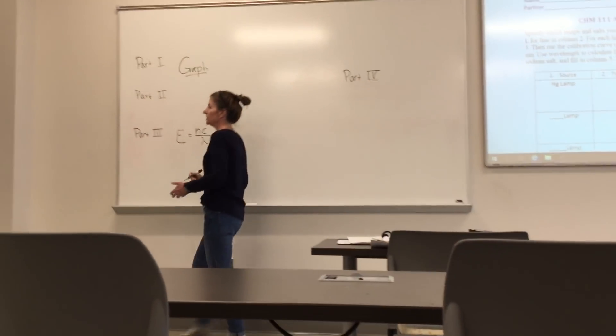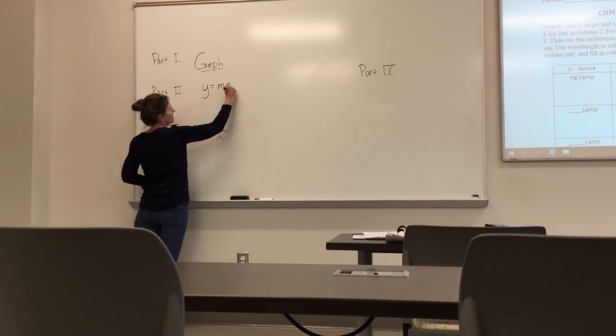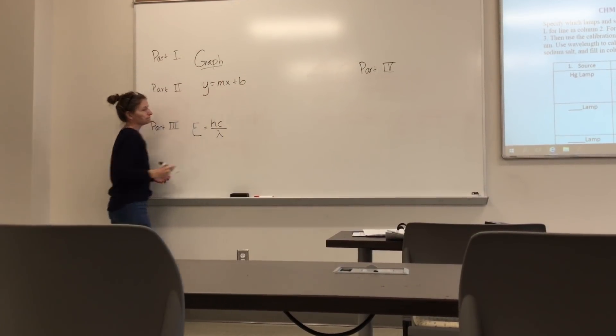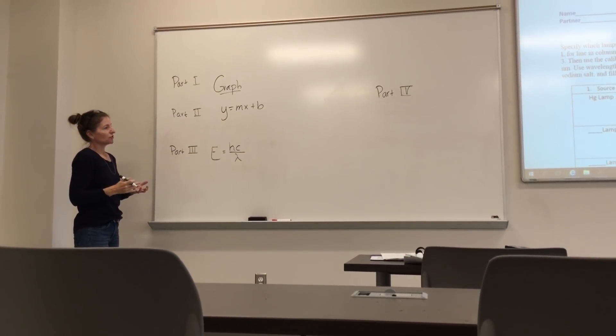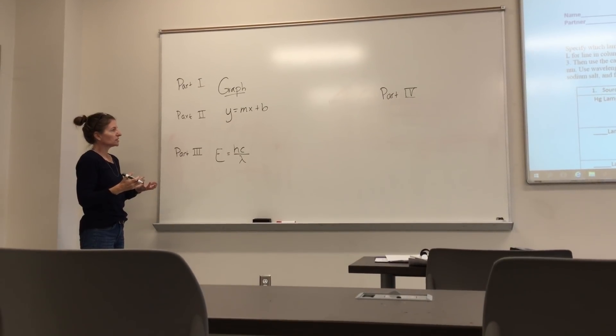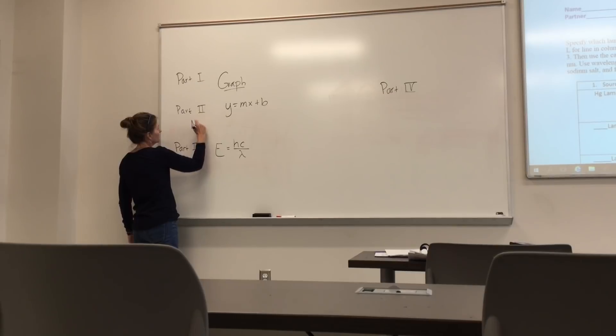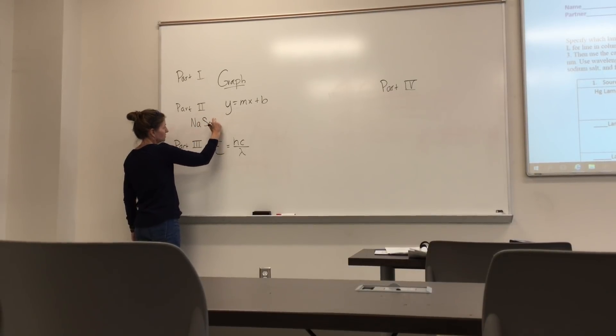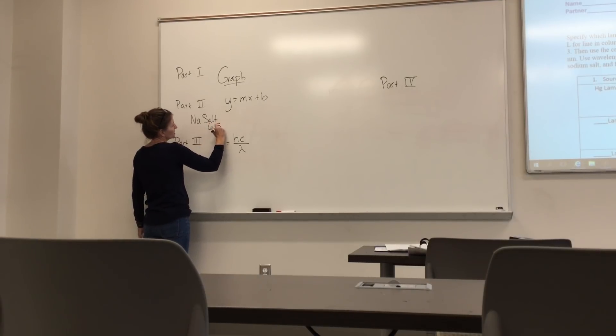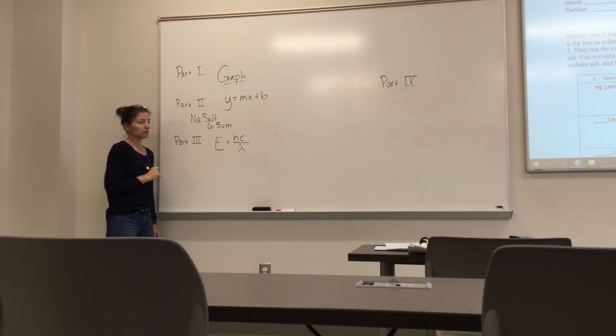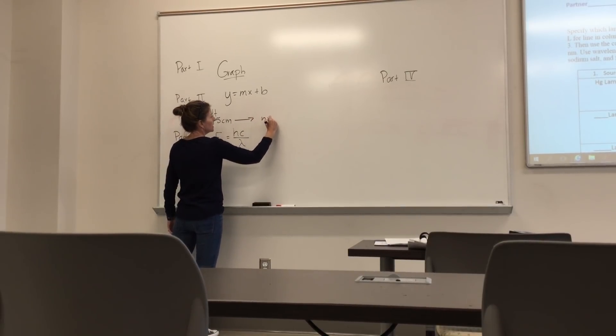Now in part two, once you get that graph, now remember I told you, you're going to end up with a trend line. And that trend line, you need for each of those centimeters you measure for the lamps or for the salts, you need to then put those centimeters in. So let's say that you had a sodium salt that you used, and you measured 6.5 centimeters. You need to find out what is that in nanometers.